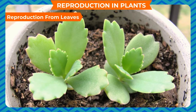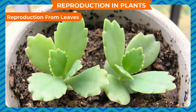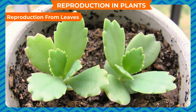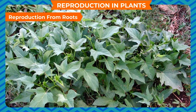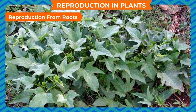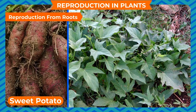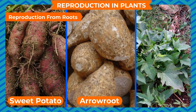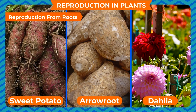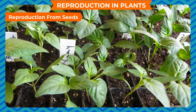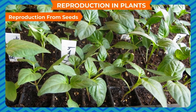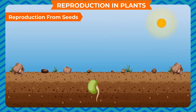When these leaves are planted in moist soil, new plants grow from them. Reproduction from roots: roots of some plants like sweet potato, arrowroot, and dahlia also grow new plants from them.